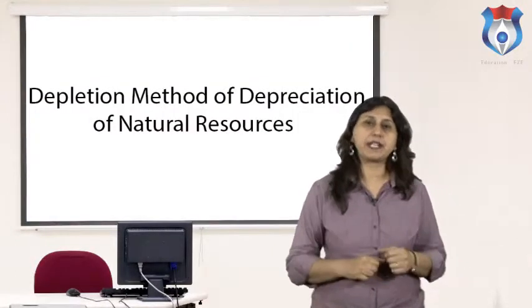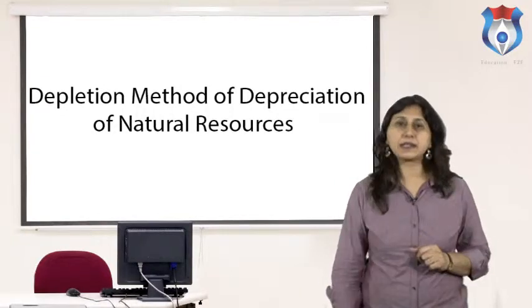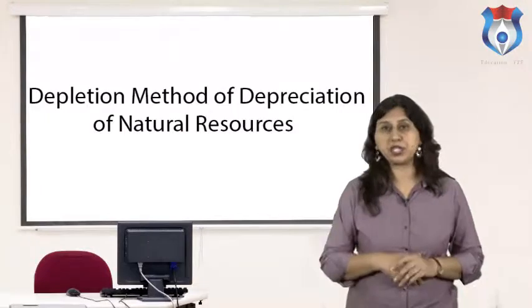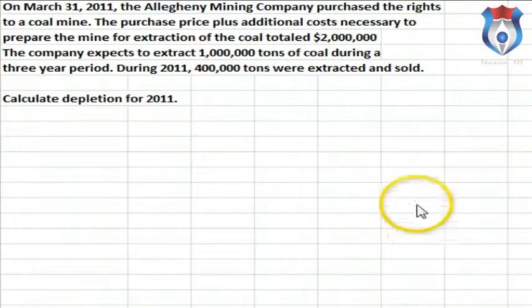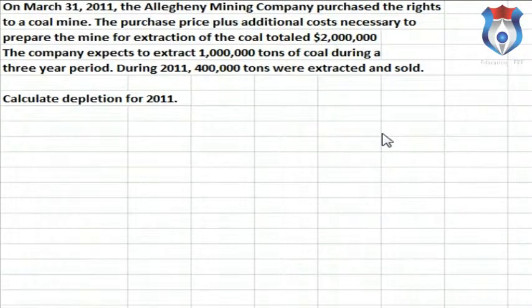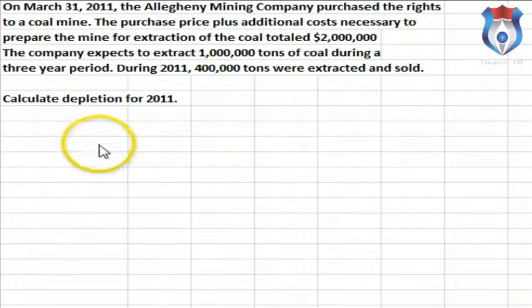The depletion method applies to natural resources. Depletion works a lot like units of production. In this example, on March 31, 2011, the Allegheny Mining Company purchased the rights to a coal mine. The purchase price plus additional costs necessary to prepare the mine for extraction totaled $2 million. The company expects to extract 1 million tons of coal during the three-year period. During 2011, 400,000 tons were extracted and sold. We want to calculate depletion for 2011.